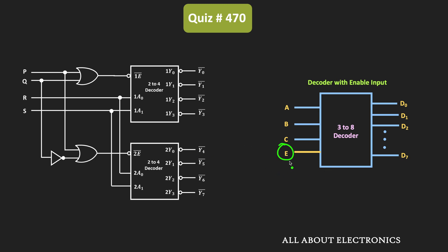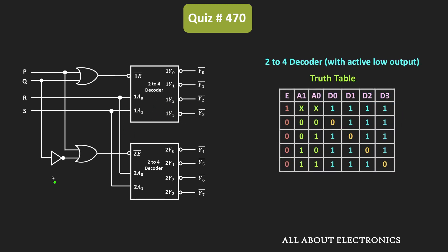In this circuit, instead of a 3-to-8 decoder, we have two 2-to-4 decoders — these 2-to-4 decoders are used as a 3-to-8 decoder. This is the truth table of the 2-to-4 decoder. As you can see, in this 2-to-4 decoder, the enable input is active-low, and similarly the outputs are also active-low. When the enable input is 0, the 2-to-4 decoder gets active; when the enable input is 1, the decoder remains inactive, and irrespective of address lines A0 and A1, outputs Y0 to Y3 remain 1.